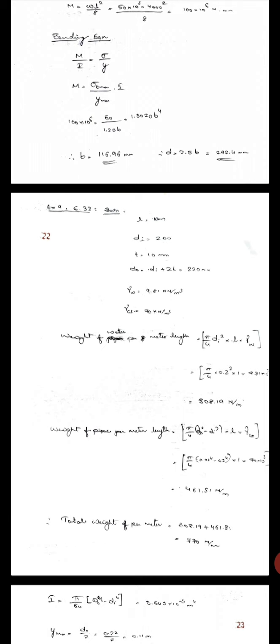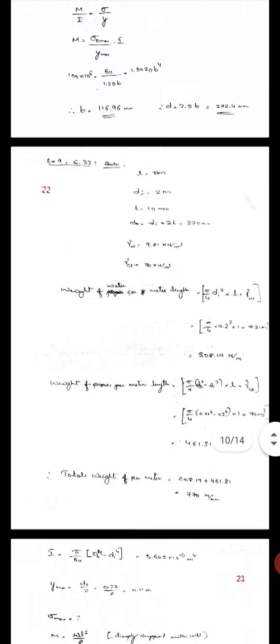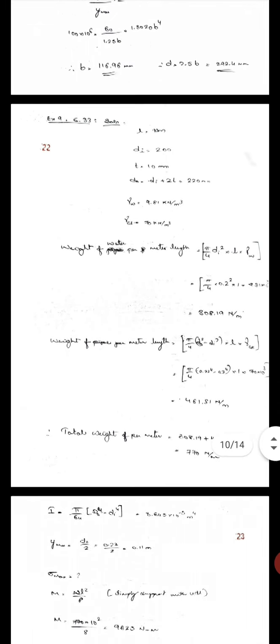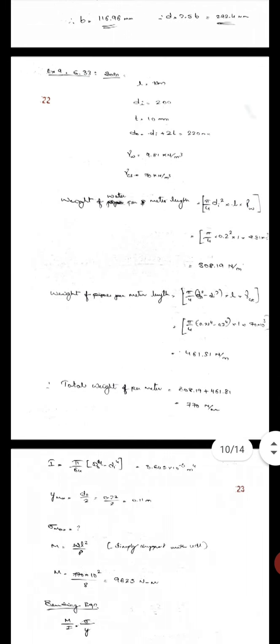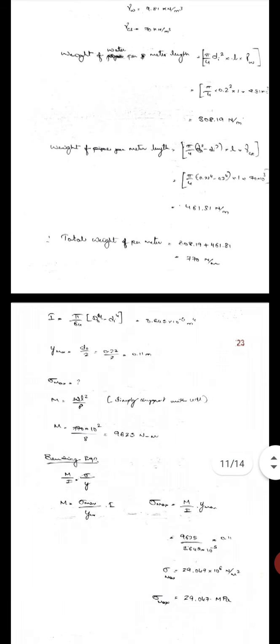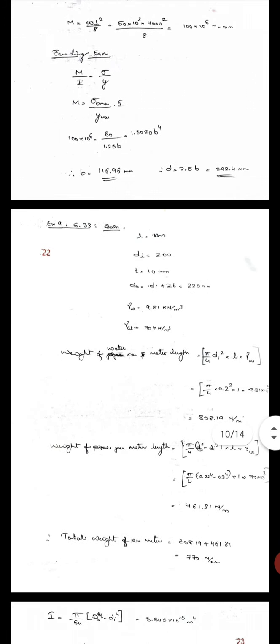The specific gravity of water is 1.8, density is 1 kilonewton per meter cube, and density of cast iron pipe is given per meter cube. Determine the maximum stress induced in the cast iron pipe.